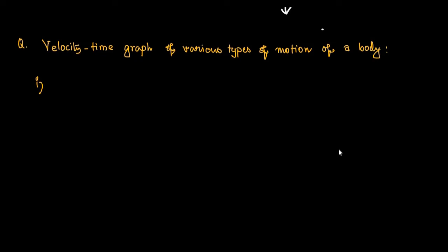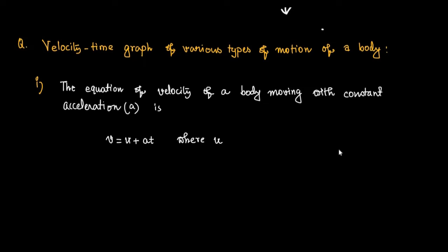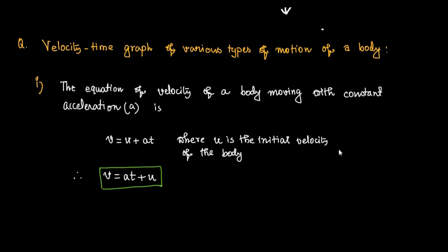Case 1: The equation of velocity of a body moving with uniform acceleration is given by v = u + at, where u is the initial velocity of the body and a is the uniform acceleration. Therefore, v can be written as v = at + u.